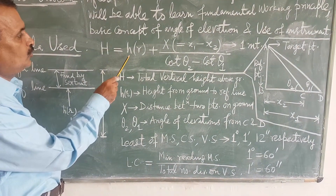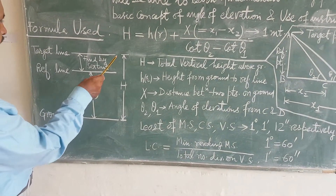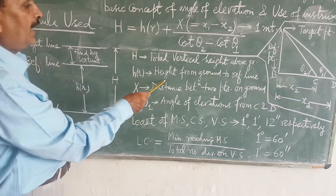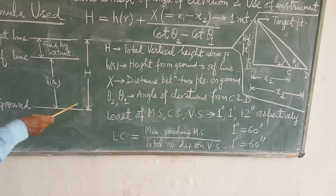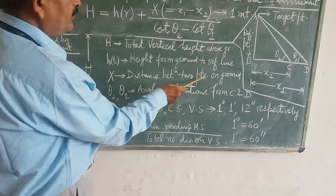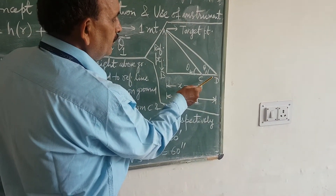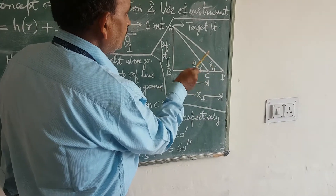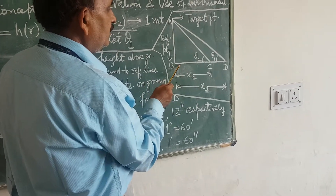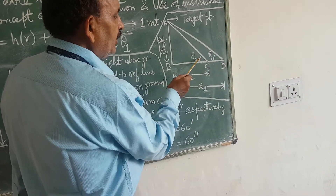The formula used: capital H is equal to small h. Capital H is the distance between the target line and the ground. Small h is the height from ground to reference line. X is the distance between two points on the ground. There is a C point and D point. Angular elevations from D point is theta 1 — this is the target point and this is the reference point. The angle made by the target point to the reference point is theta 1 from D and theta 2 from C.